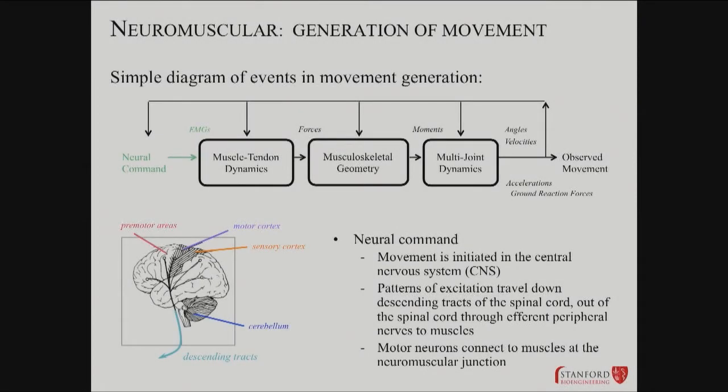Generating movement — what is the sequence of systems that are interacting? You've got a neural command. We've talked about the central nervous system and the peripheral nervous system. You end up having to think about muscles contracting, pulling on tendons, which leads to questions about musculoskeletal geometry: the moments around a joint, the forces and opposing forces at play. To really understand things, you have to think about multi-joint dynamics. Nothing makes sense in isolation — a single joint doesn't tell you how someone walks or fails to walk normally, and all that brings you to your final movement.